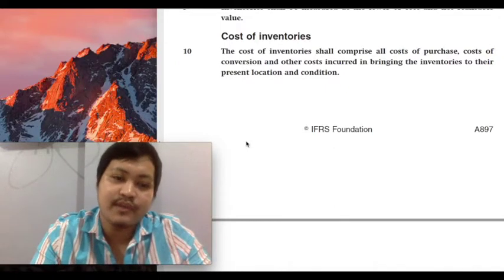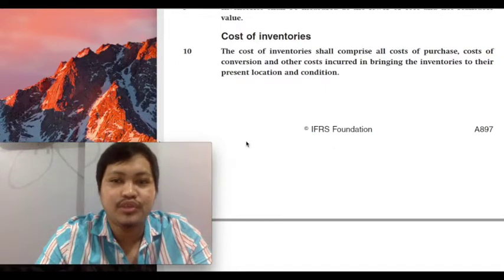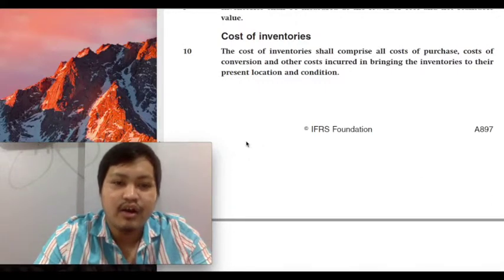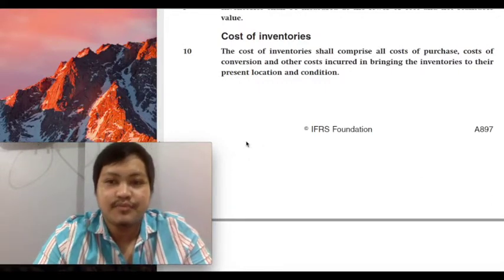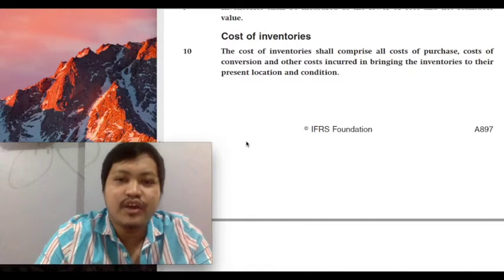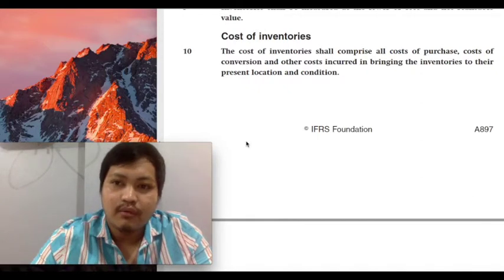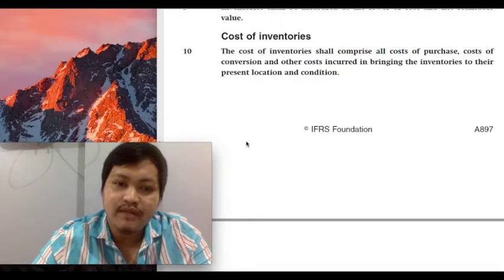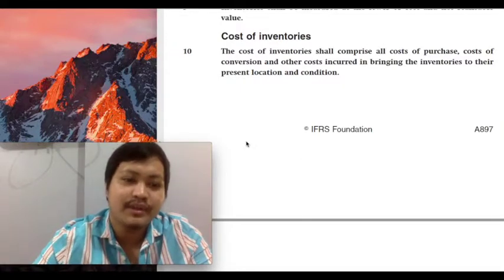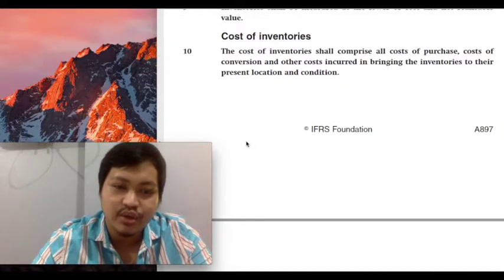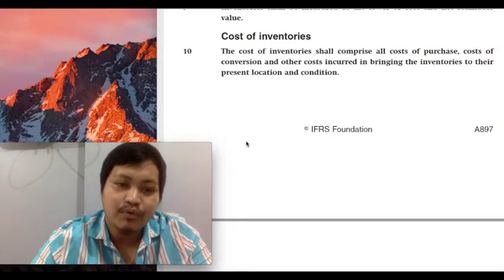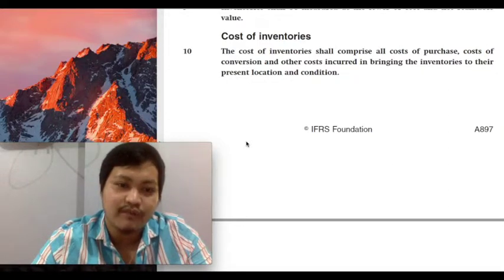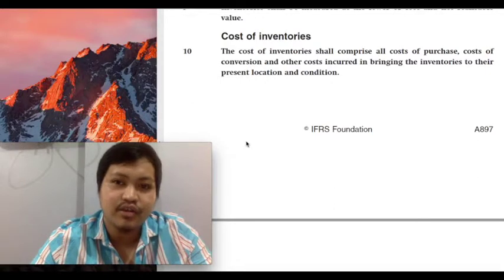Most of the challenge in determining the cost of inventories will come from the next two components of your cost, which are the cost of conversion and all other costs necessary to bring the asset to its intended location and condition. But for costs of conversion, this would only be relevant if we are a manufacturing company — if we are in the business of buying raw materials and converting them into finished goods, where we still have to put the raw materials in a production process.